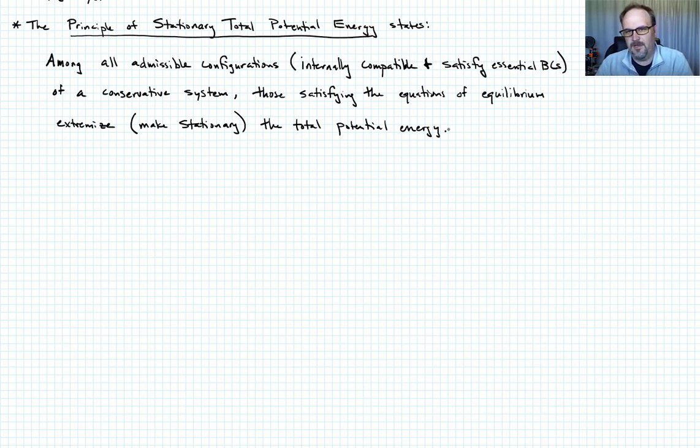So we'll do an example to illustrate this in a second, but what this basically means is that if you can write down the total potential energy of the system, and you can take its variations that are equal to zero, extremize that functional, then the solution that you obtain is the solution that satisfies the equations of equilibrium.